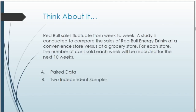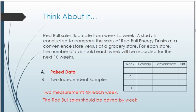Third question: Red Bull sales fluctuate week to week. A study compares sales at a convenience store versus a grocery store, recording cans sold each week for the next 10 weeks. Is this paired or two independent samples? This one is a bit trickier — it's actually paired data. The data is paired by each week: grocery store sales versus convenience store sales for the same week.